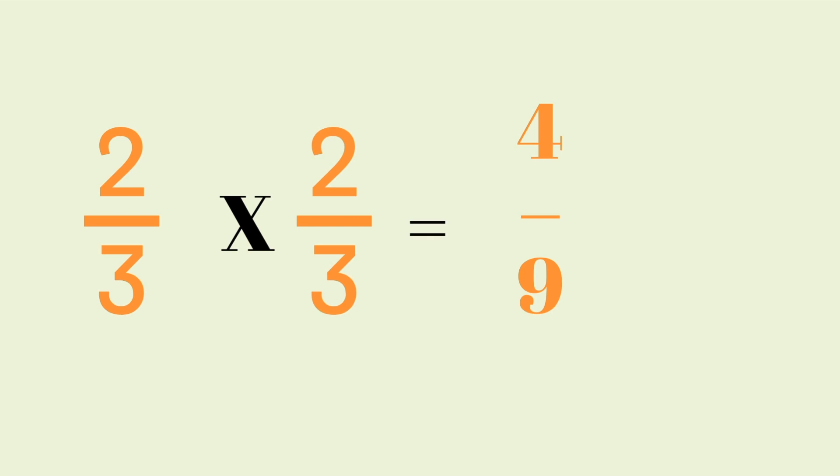2 times 2 is 4 and 3 times 3 is 9. So it's 4 ninths.